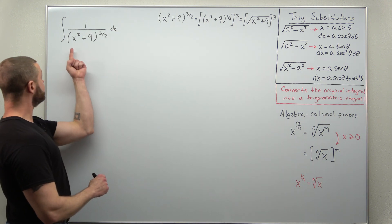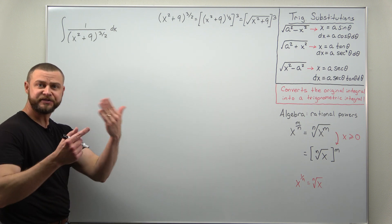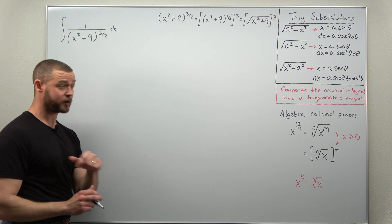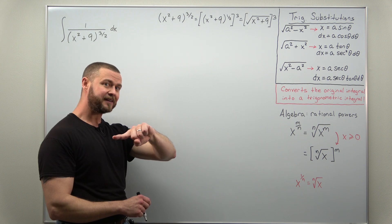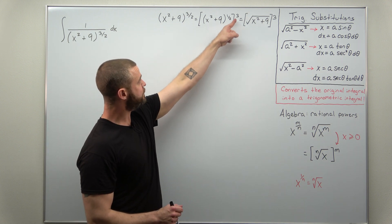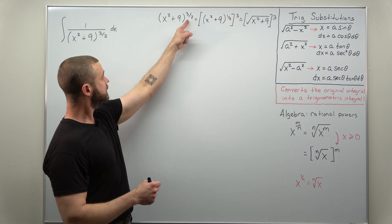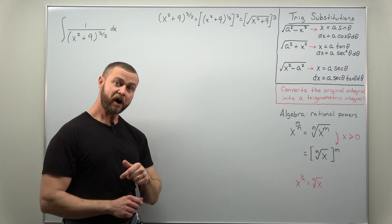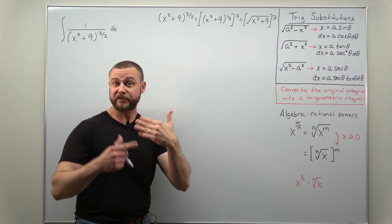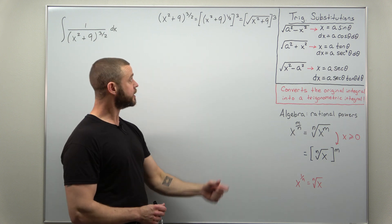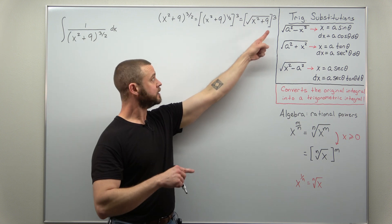Let's start with the expression (x² + 9) to the 3/2 power and simplify it to first recognize that there is a square root. We're going to think of the 3/2 power as a half times 3. Basic exponent rules: the outer power 3 multiplies the inner power, 3 times 1/2 gives the 3/2 power. We recognize the 1/2 power as equivalent to a square root, rewriting this as the square root of (x² + 9), all cubed.